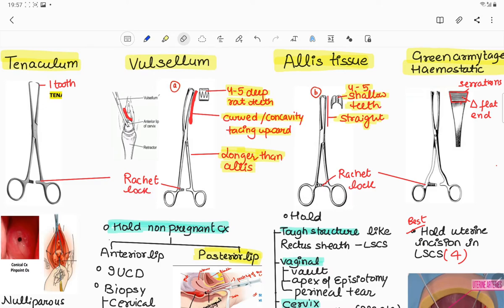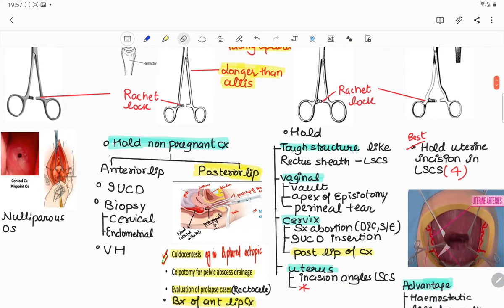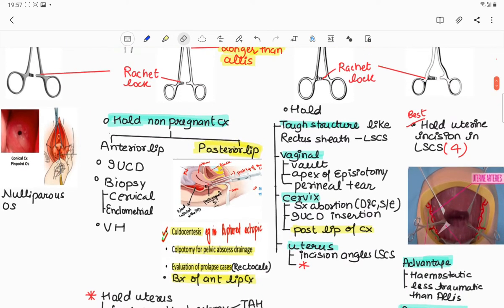Valsellum is used to hold the non-pregnant cervix. Conditions for holding the anterior lip of cervix are number one during intrauterine copper T insertion, cervical or endometrial biopsy, or during vaginal hysterectomy.